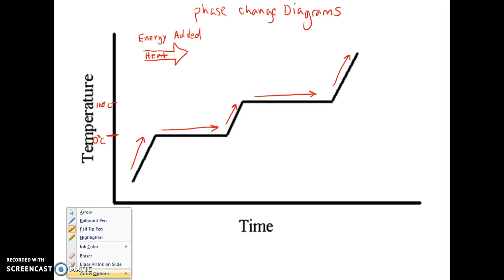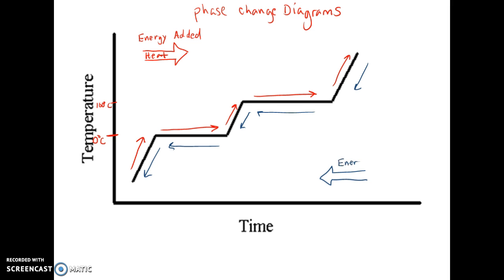But on the other side, I'm going to change colors to blue. We can do the same kind of thing. We can decrease temperature, but it still stays constant here. Decrease temperature, still stays constant here, and decrease temperature here. So I can add that arrow down below. This would be energy removed, and so we are cooling things down. We can look at both directions on a phase change diagram.